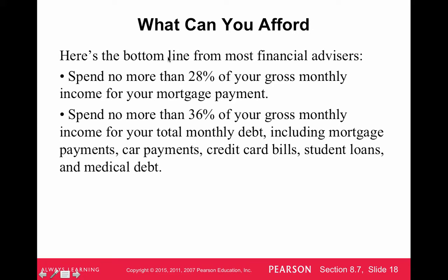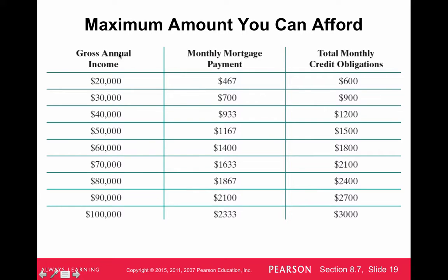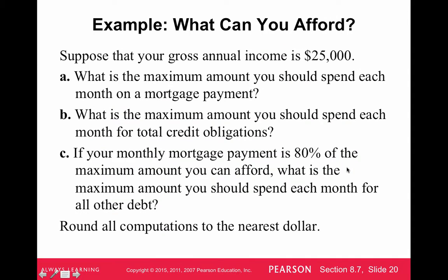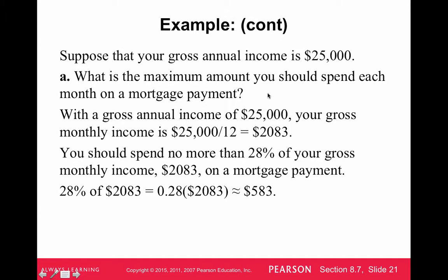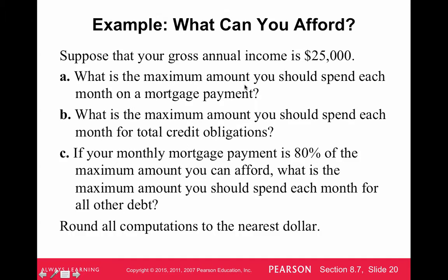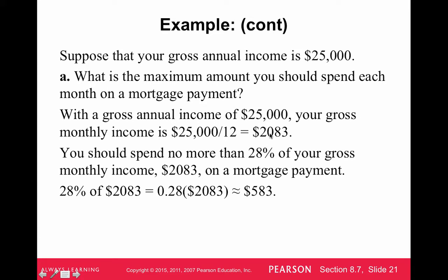As for what you can afford: the recommendation is to spend no more than 28% of your gross monthly income on your mortgage payment. If your gross annual income is $25,000, divide by 12 to get monthly income, then take 28% of that — you can afford a mortgage payment of about $583. That's not much, but $25,000 gross annual income isn't much either.